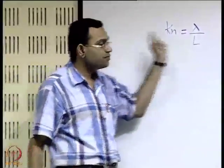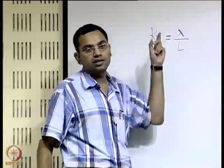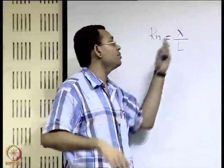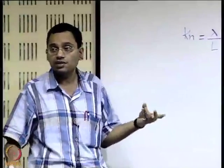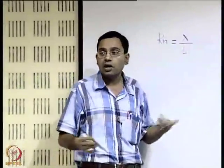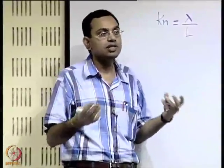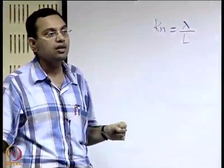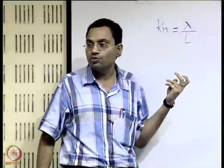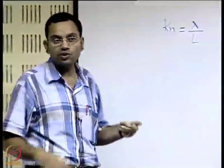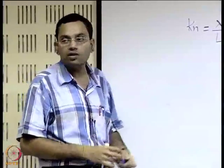On the other hand, if the Knudsen number is large, that means the mean free path may even be larger than the characteristic length scale — the system is very rarefied. In such cases, you have very few molecules, and there are lots of uncertainties with respect to the presence of molecules in individual elemental volumes. In those cases, the macroscopic way of defining properties of the fluid might not work so efficiently.